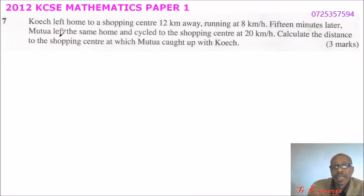We are told, Koech left home to a shopping center 12 kilometers away, running at 8 kilometers per hour. 15 minutes later, Mutua left the same home and cycled to the shopping center at 20 kilometers per hour. Calculate the distance to the shopping center at which Mutua caught up with Koech.